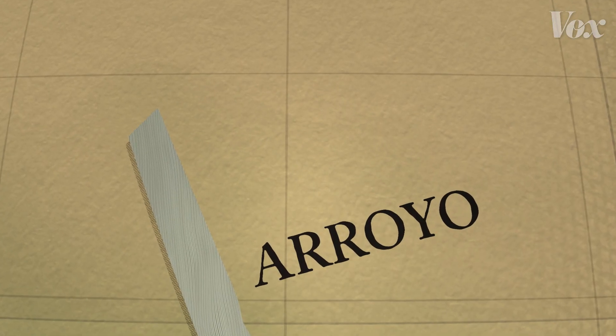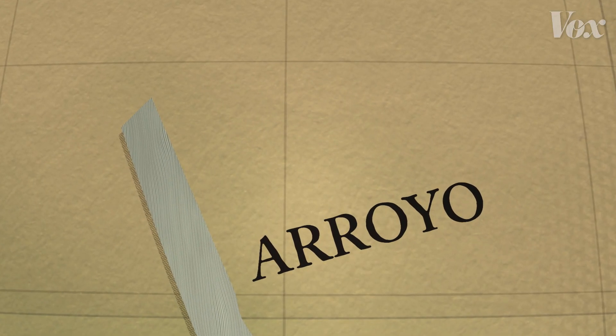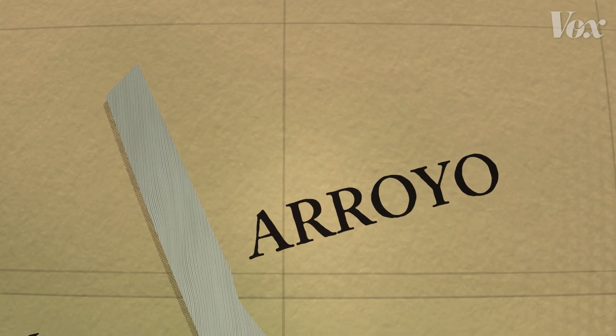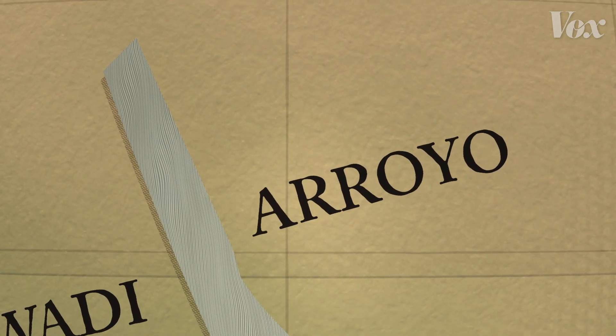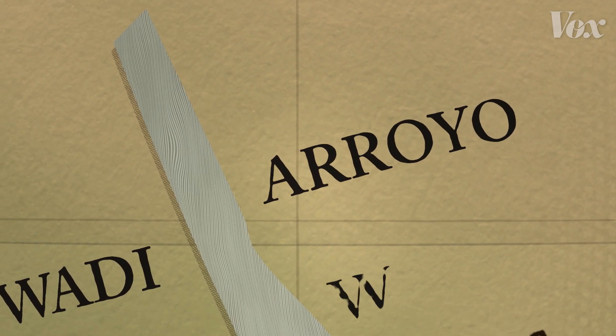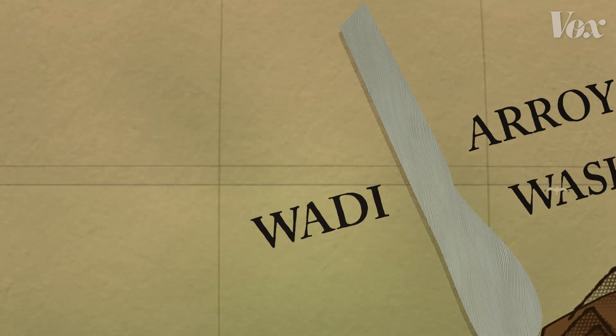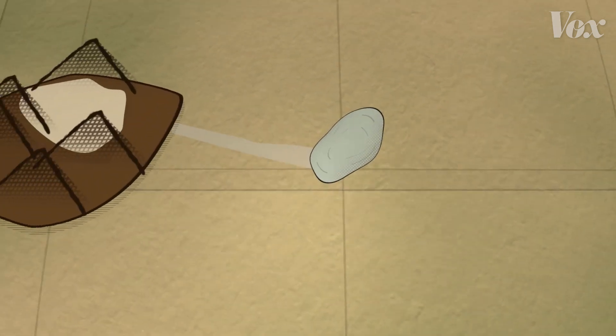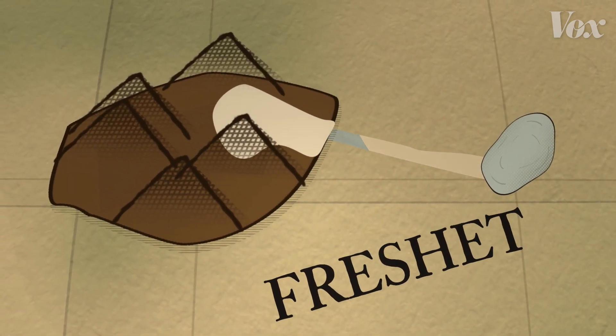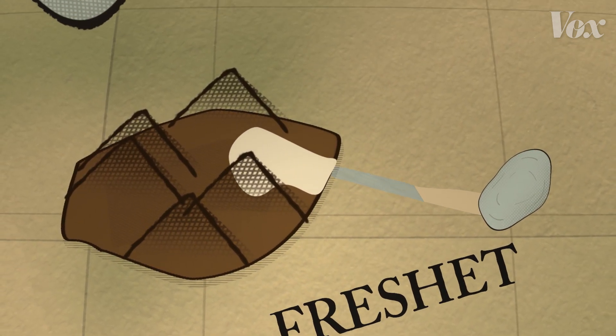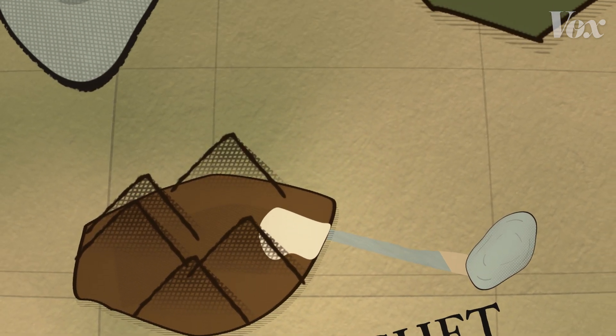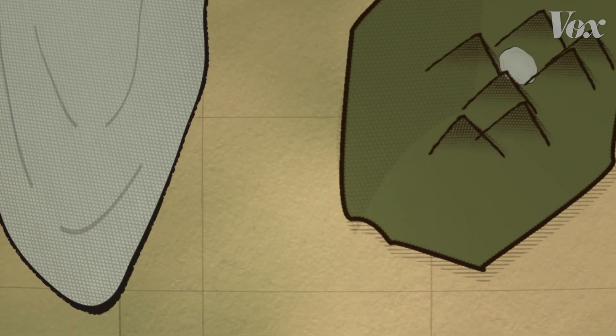An arroyo is a Spanish word for a creek that fills in after a heavy rain, and it's commonly used in the American Southwest. It's called a wadi in Arabic. Elsewhere it might be called a wash. A freshet has a few definitions, but usually it fills with water after a heavy snow.